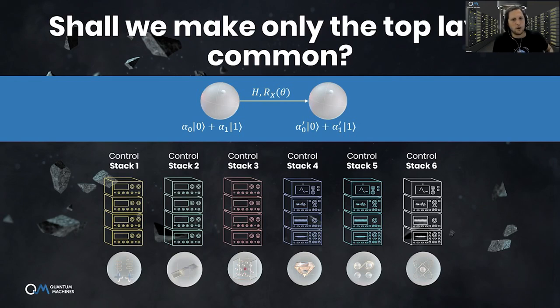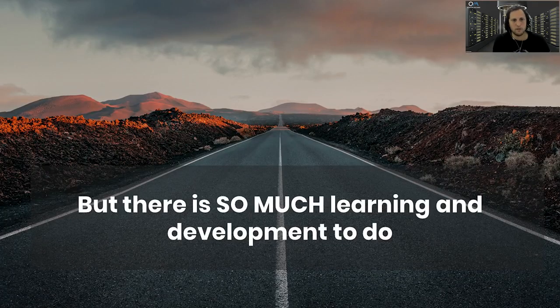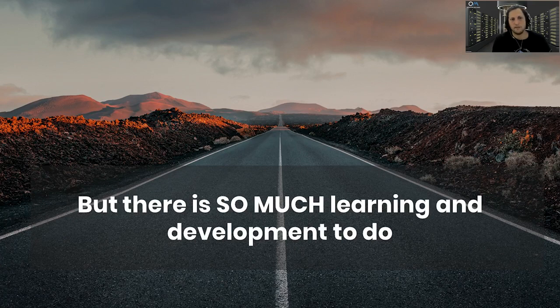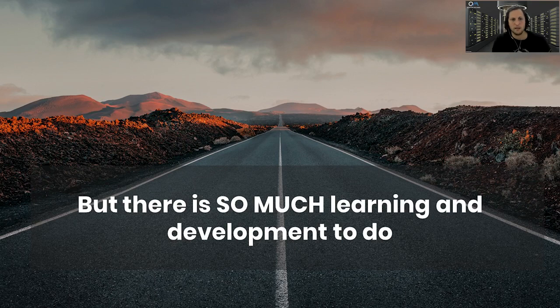No matter how we physically implement qubits and controls, we want to eventually, after calibrations and optimizations, think about our qubits in the most standard abstract terms of quantum information and computation. So how should we design the control stack to accelerate the timeline?